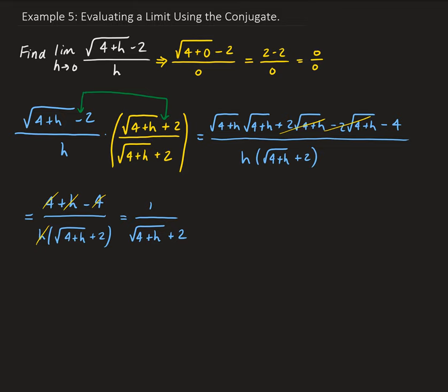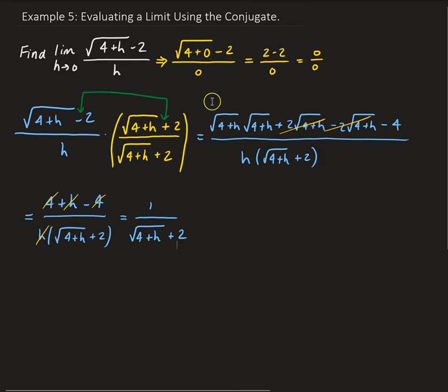So that is using the conjugate to expand our expression. If you wanted to, instead of expanding everything out, you could simply square the square root of 4 plus h to get 4 plus h, and then take the square of 2 to get 4 — with a minus sign because of the difference of signs. Either expanding fully or squaring those terms directly is fine.